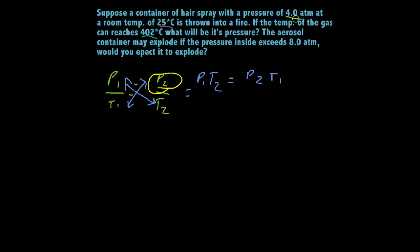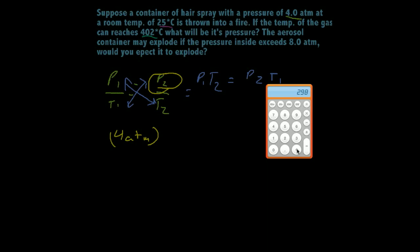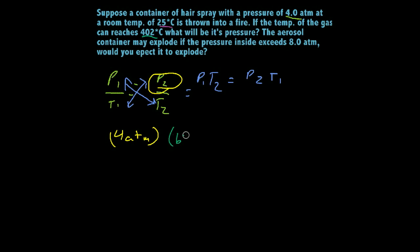So our pressure 1 was 4 atmospheric units, I did that in yellow, so let me draw that in yellow over here, 4 atm, times our temperature 2, which was 402 degrees Celsius. The only problem with that is that's in Celsius. We need to be in Kelvin. So if you remember from the last video, 402 plus 273 is going to equal 675, so 675 degrees Kelvin.